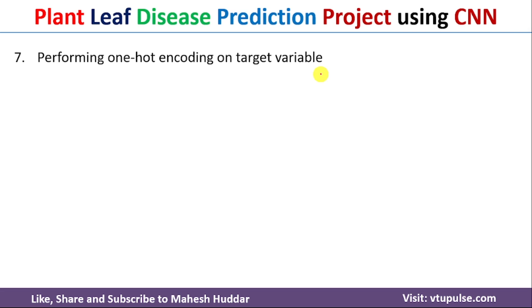In this case, we have assigned 0, 1, and 2 as the labels for the target. If you assign these values as-is, the label 2 will override or outperform 0 and 1. To avoid that, we need to perform one-hot encoding, where we give equal importance to each of those particular target variables.